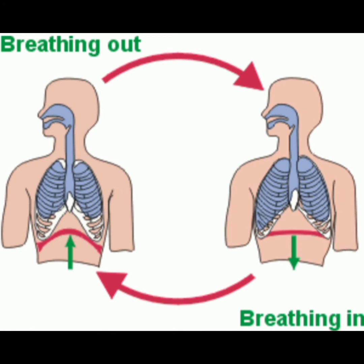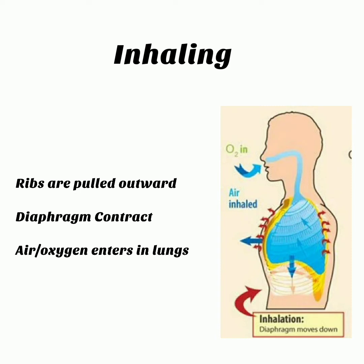What is inhaling? Do these steps with me. First of all, inhale the air. You will feel that the ribs are pulled outward and the diaphragm contracts and moves downward. Due to these two movements, the air — the oxygen in the air — moves into our lungs. So when the intercostal muscles pull our ribs outward and the diaphragm contracts, the air enters the lungs. This process is called inhaling.